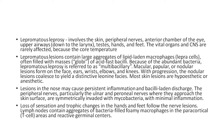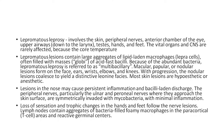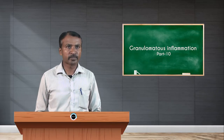Most skin lesions are hypoesthetic or anesthetic — loss of sensation. Lesions in the nose may cause persistent inflammation and bacilli-laden discharge. The peripheral nerves, particularly the ulnar and peroneal nerves where they approach the skin surface, are symmetrically invaded with mycobacteria with minimal inflammation. Loss of sensation and trophic changes in the hands and feet follow. Lymph nodes contain aggregates of bacteria-filled foamy macrophages in the paracortical areas and reactive germinal centers.